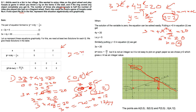Now for the second equation Y = X/2. Put X = 0: Y = 0, so the line passes through the origin. Put X = 2: Y = 1. So our two points for this line are (0, 0) and (2, 1). Mark these two points and draw a line through them.